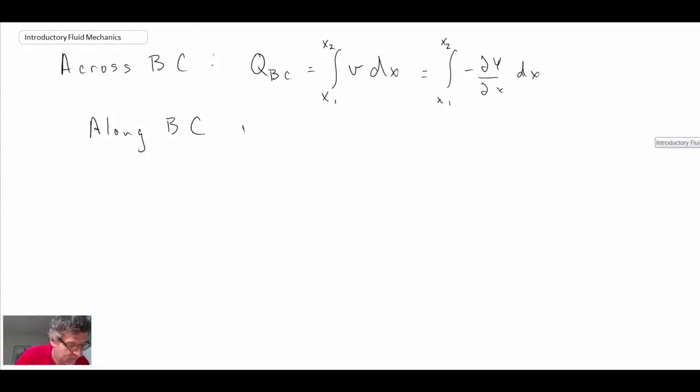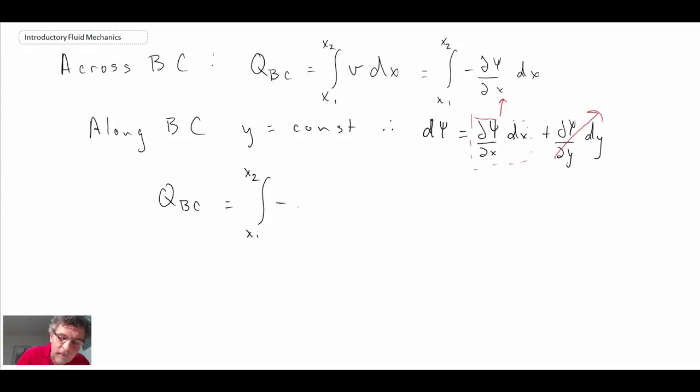What that means, looking at the total derivative of psi: if y is a constant, then the second term here cancels out. Just like before, this here is in there, except it's the negative of it. So we're going to make a substitution. When we integrate that, we get psi 2 minus psi 1.